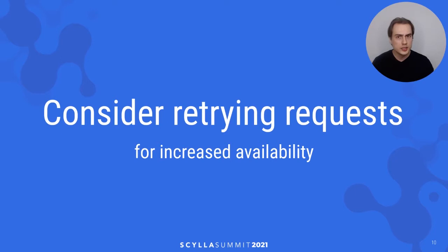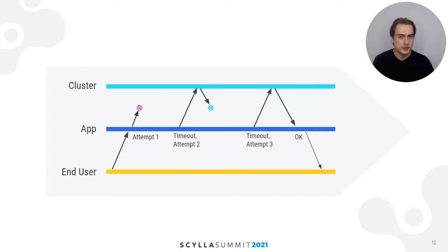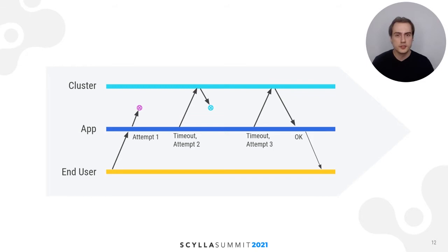Let's move to the next topic: retrying requests. Say that your client sent a request to Scylla and it failed. What should you do? Sometimes your service will become unavailable no matter what you do — you cannot beat the laws of physics. The only option may be to propagate the error out of the application to the end user, so be prepared. But sometimes it is possible to do better by retrying requests. The app tries to contact Scylla but fails, then it retries, which will cause the user to wait a bit longer for feedback. But if the retry succeeds, the user will get a successful response. In effect, the perceived availability of your service is greater, and users love availability.